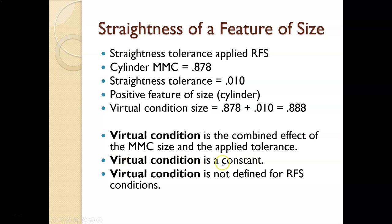The virtual condition is the combined effect of the MMC size and the applied tolerance. Note: the term 'virtual condition size' used here is a slight misnomer — virtual condition is a constant defined only under MMC conditions, not RFS. The three calculation bullets are accurate; the label 'virtual condition size' for the RFS case is not quite right. Keep that in mind.